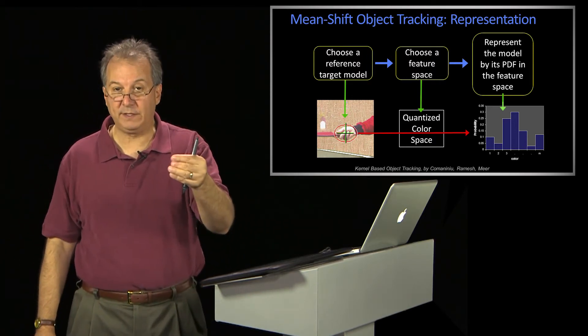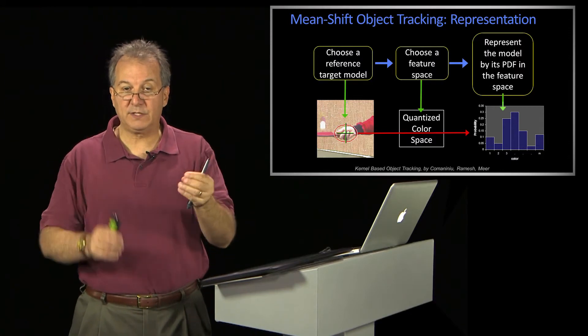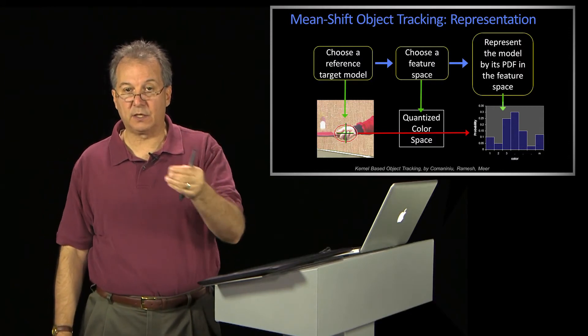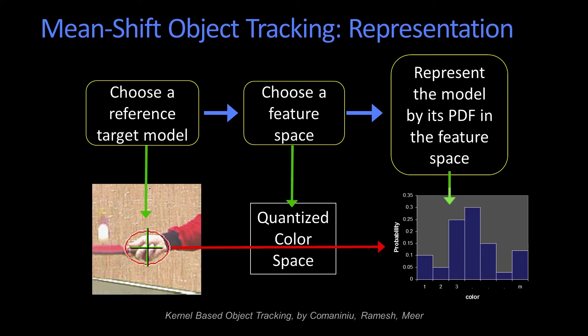Every point within that region, you'd take its color and put it in the right bin. That would give you your probability histogram, which you can think of as a PDF of the color over that region. That's the representation of the region that we're going to try to track.